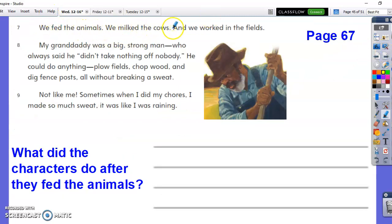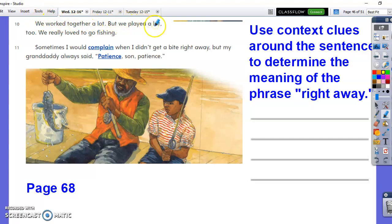We fed the animals, we milked the cows, and we worked in the fields. My granddaddy was a big, strong man who always said he didn't take nothing off nobody. He could do anything, plow fields, chop wood, and dig fence posts, all without breaking a sweat. Not like me. Sometimes when I did my chores, I made so much sweat, it was like I was raining. We worked together a lot, but we played a lot, too. We really loved to go fishing. Sometimes I'd complain when I didn't get a bite right away, but my granddaddy always said, Patience, son, patience. Use context clues around the sentence to determine the meaning of the phrase right away. You have the words right away. Then you have Grandpa telling him to be patient.